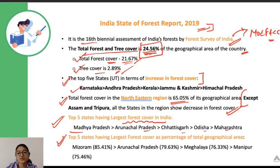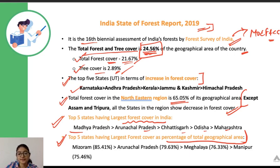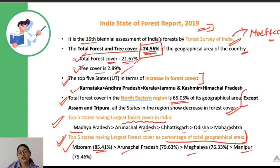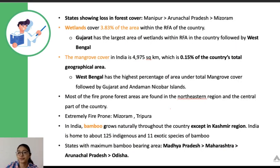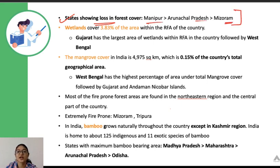Percentage-wise, the maximum forest cover is in Mizoram at 85.41%, followed by Arunachal Pradesh, Meghalaya, and Manipur. If Union Territories are included, Lakshadweep has the largest forest cover at around 91%. States showing maximum loss in forest cover are Manipur, followed by Arunachal Pradesh and Mizoram — mostly northeastern states.